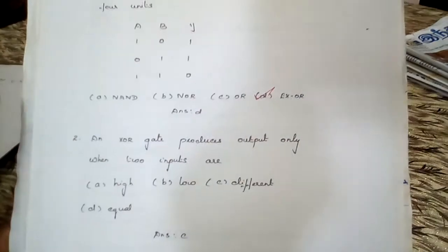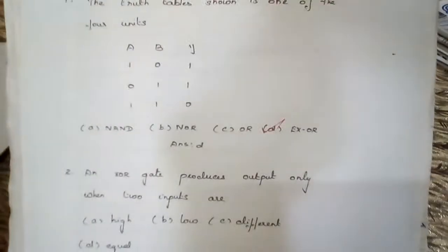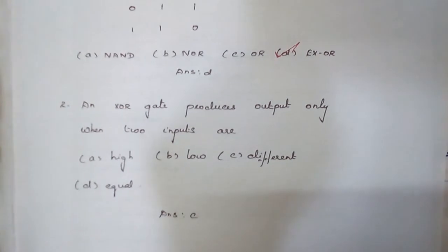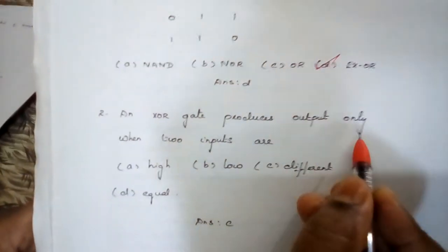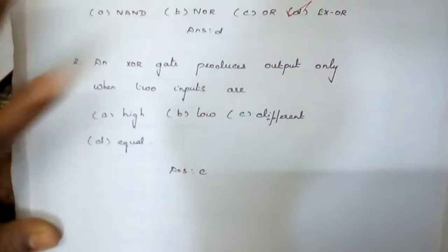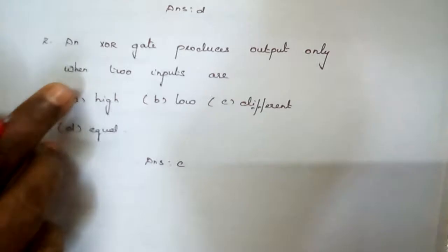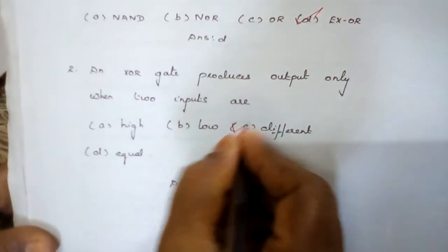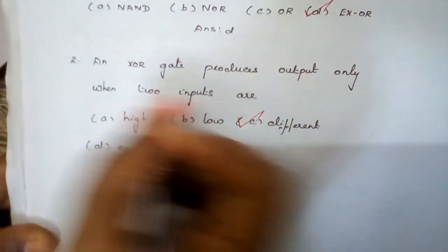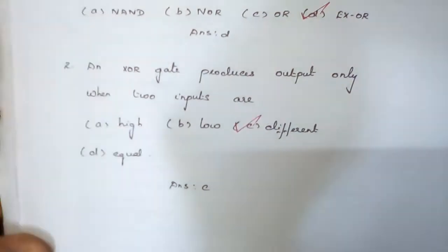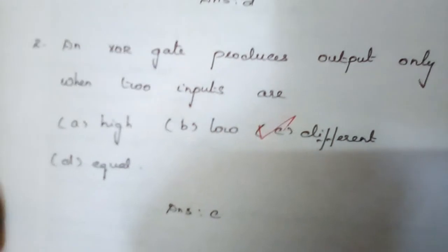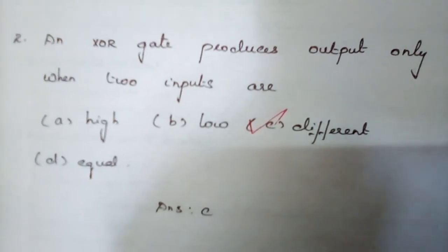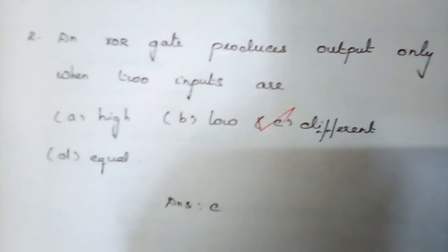We have discussed the truth table from the first session in digital electronics. Those who have not seen the truth tables and function of the gates, please go to the playlist. The next question: An XOR gate produces output only when two inputs are different. The options are high, low, different, and equal. The answer is C — XOR gate produces output only when two inputs are different. For those preparing for examinations such as TRB, TNBA, TNBA, CET in digital electronics, this is an important question. You can expect one question from XOR gate.